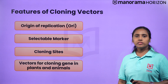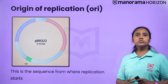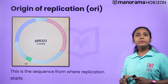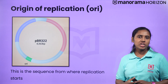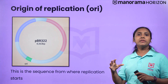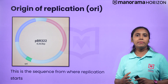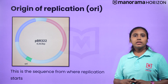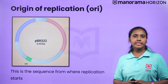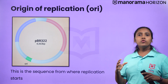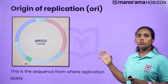Let's start with the origin of replication, also known as ORI. This is a sequence from where replication starts, and any piece of DNA when linked to this sequence can be made to replicate within the host cells. It is also responsible for controlling the copy number of the linked DNA. Therefore, if you want more copies, you must choose a vector that supports more copy numbers.